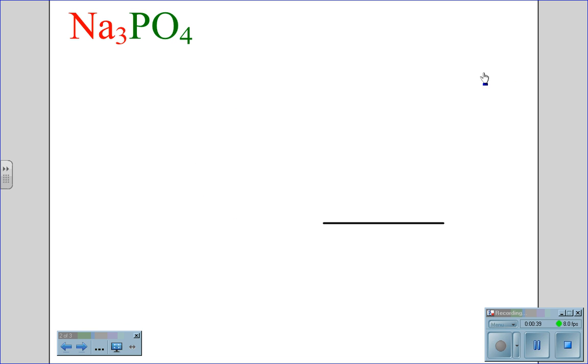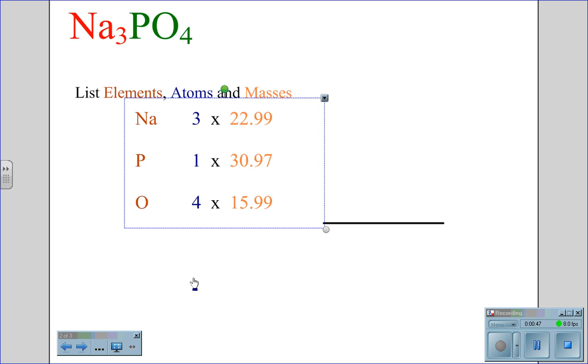I start with the Na3PO4 molecule, and the first thing I want to do is list the elements, the atoms, and their masses. Na, there are three atoms. Phosphorus has one atom. Oxygen has four atoms. From the periodic table, I see that sodium has a mass of 22.99, phosphorus has a mass of 30.97, and oxygen has a mass of 15.99.